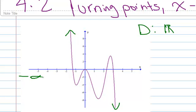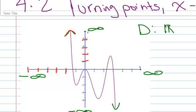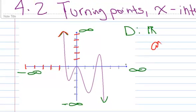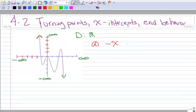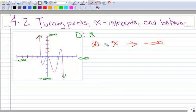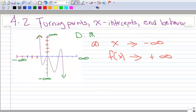That means it continues out to negative infinity on one side and positive infinity on the other. This particular arrow on the left indicates that as x values get smaller and smaller, the y values get larger and larger. So we say: as x approaches negative infinity, f(x) approaches positive infinity.